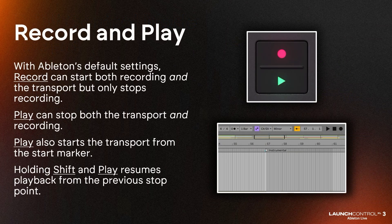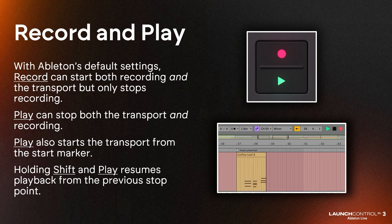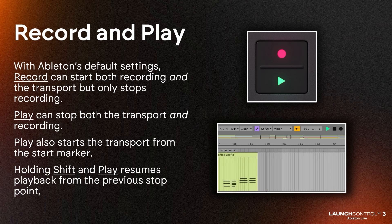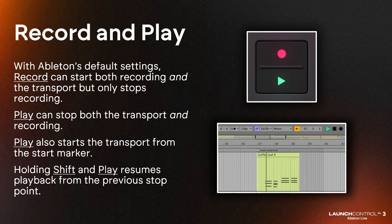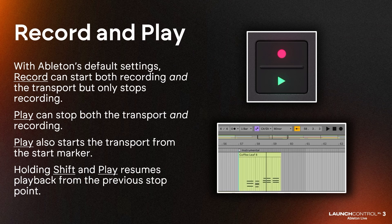With Ableton's default settings, record can start both recording and the transport, but only stops recording. Play can stop both the transport and recording. Play also starts the transport from the start marker; holding shift and play resumes playback from the previous stop point.